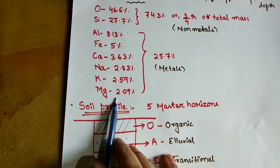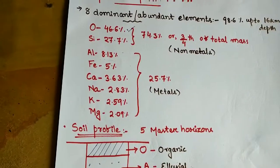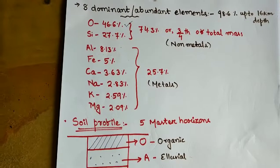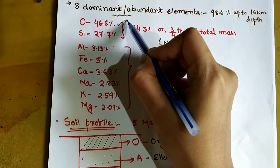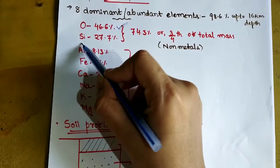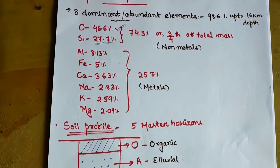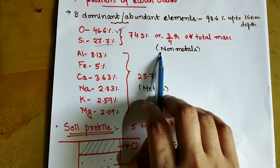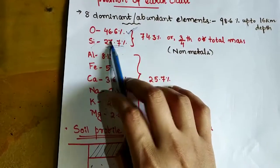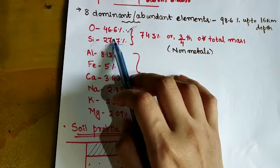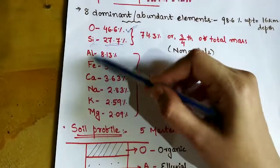Now for exam questions: they can ask which element contributes the highest percentage to the earth crust — the answer is oxygen at 46.6%. The second highest is silicon at 27.7%. Another type of question may ask: what is the percentage of non-metals in the earth crust? That is 74.3%, which comes from adding 46.6% (oxygen) plus 27.7% (silicon).